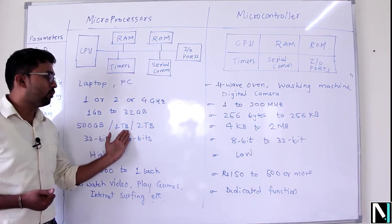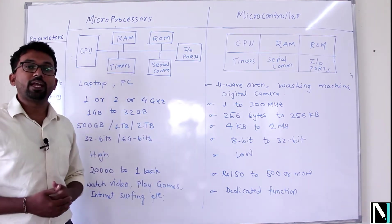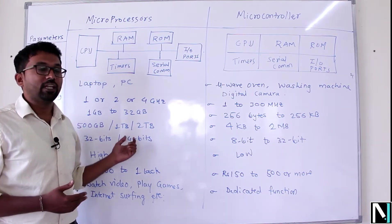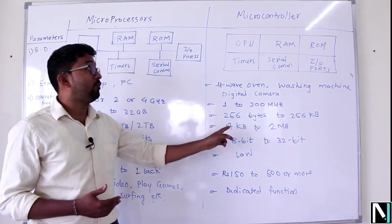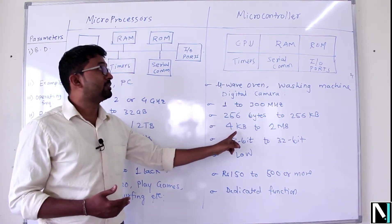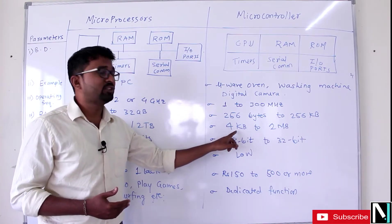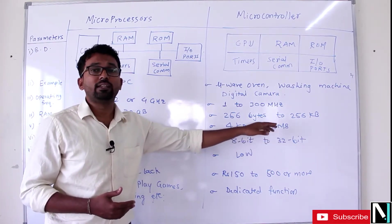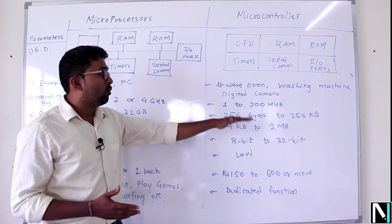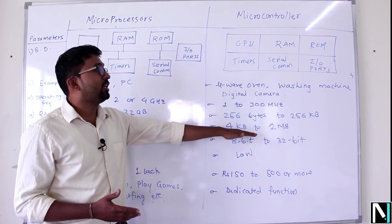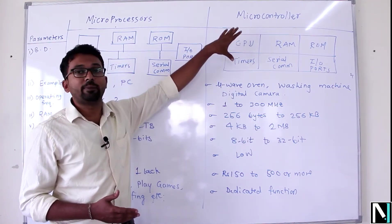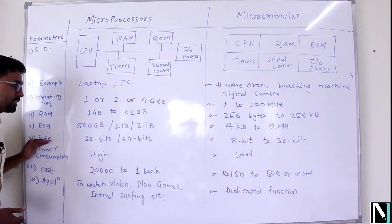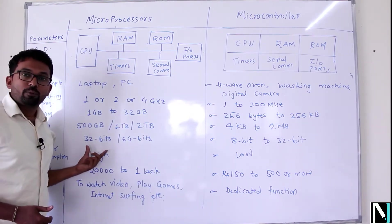Next is ROM — that is programmable read-only memory. For microprocessor based systems, storage is almost 500 GB, 1 TB, or 2 TB; we can also interface an external hard disk with the laptop. But compared to this, the microcontroller has just 4 kilobytes to 2 megabytes. Again, there is a limitation because the ROM is built into the microcontroller.